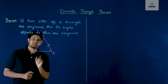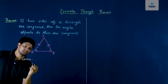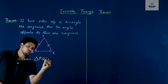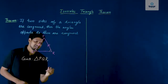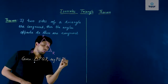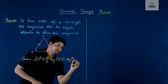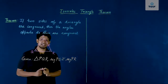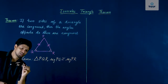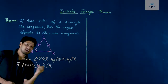So this is the theorem which we need to prove. First, we will write the given data. The given data is: we have triangle PQR and segment PQ is congruent to segment PR. We need to prove that angle Q is congruent to angle R.